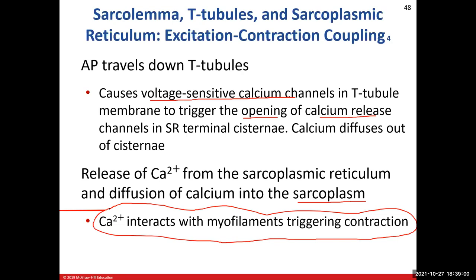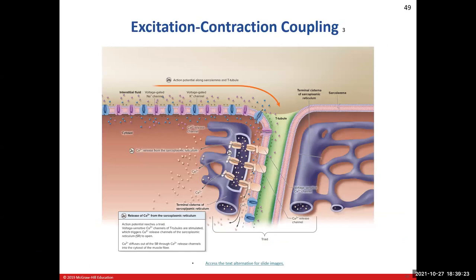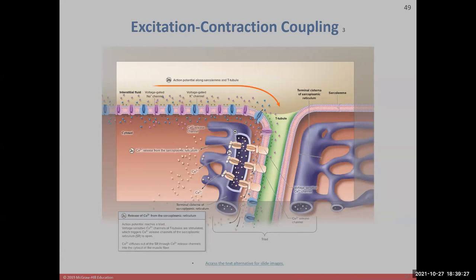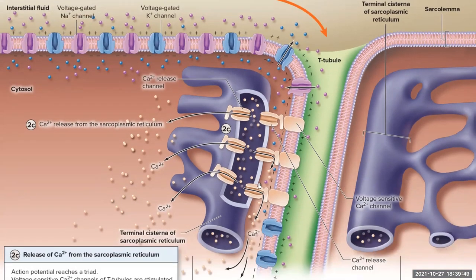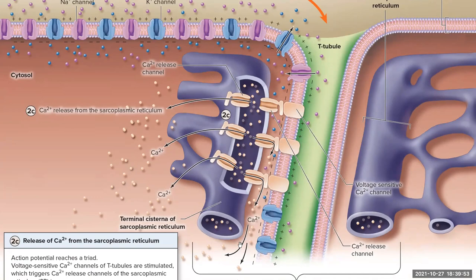If you are hypocalcemic — if you have low blood calcium — most likely you have low calcium in your tissues elsewhere. You're going to have problems with muscle contractions depending on how bad the deficiency is. Here's that picture of the action potential moving down the sarcolemma, traveling down the T-tubule, triggering the activation of voltage-sensitive calcium channels, which then trigger the opening of calcium release channels. Calcium leaves the sarcoplasmic reticulum terminal cisterna and pours into the sarcoplasm where our contractile filaments are waiting.